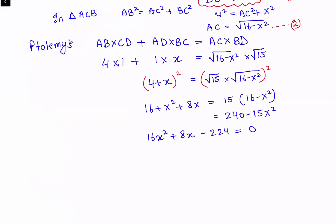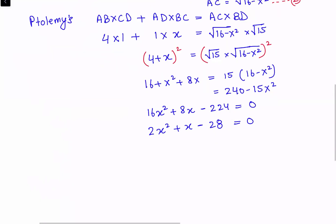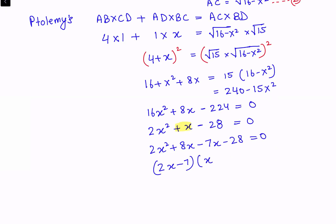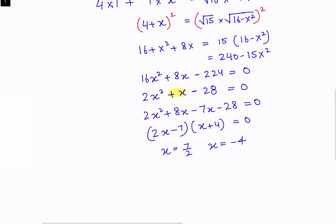Dividing the full equation by 8 gives 2X² + X − 28 = 0. Splitting the middle term so that the product is −56: 2X² + 8X − 7X − 28 = 0, which factors as (2X − 7)(X + 4) = 0. So either X = 7/2 or X = −4. Since X cannot be negative, our answer is X = 7/2 cm.